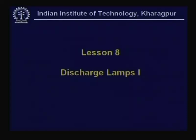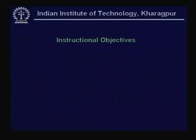Welcome to this next lecture on Illumination Engineering and Electric Utility Service. This lesson 8 is titled 'Discharge Lamps 1.' In lesson 7 we looked at artificial sources employing incandescence, which involves materials at higher temperatures. Today we move on from incandescence to the next level: electroluminescence, and we look at discharge lamps employing electroluminescence.